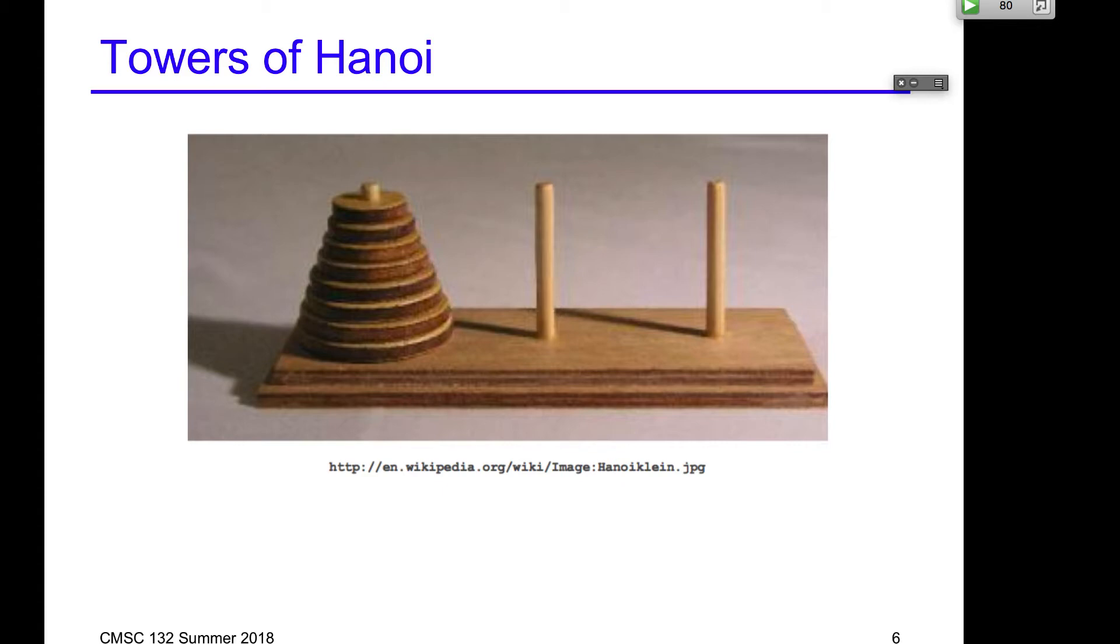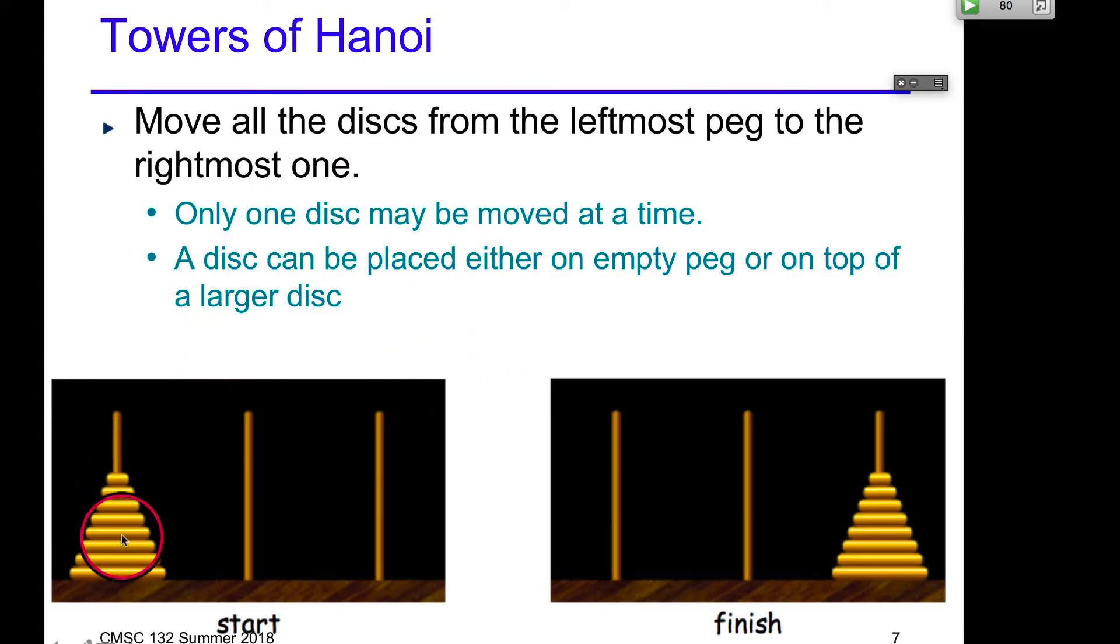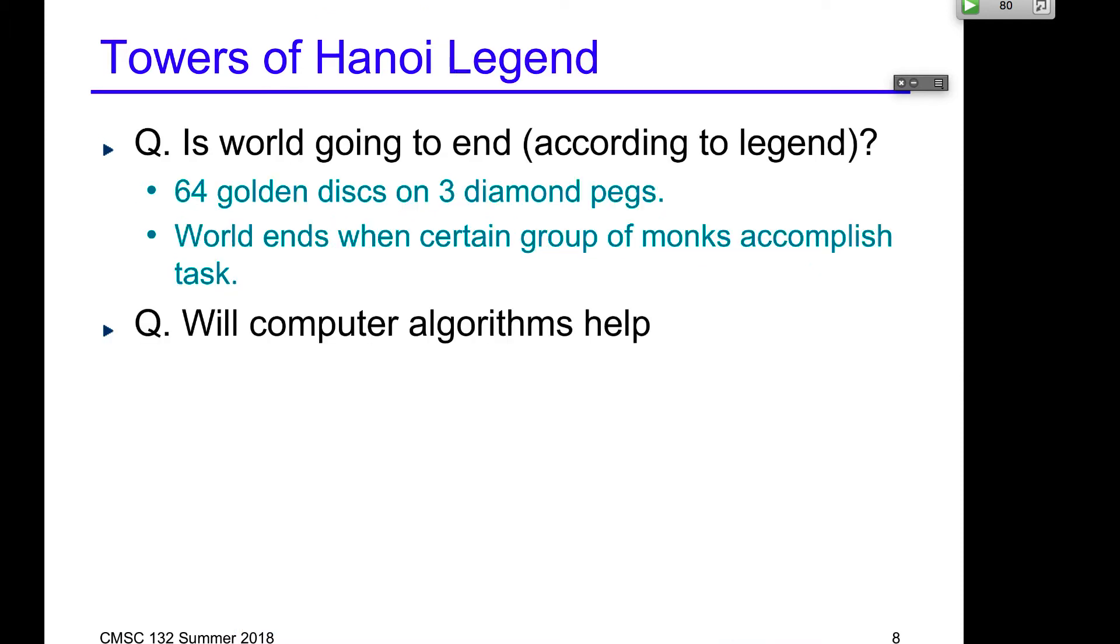So this question is, we have these golden plates and diamond needles, and we have the source, the destination, and this auxiliary middle. The problem is move everything - all those 64 plates from the source to the destination. The rule is that you can only move one plate at a time, one disc, and each has different size. You cannot put larger on top of the smaller. The legend says, in a temple in India, the monks started this mission 2,000 years ago. They're still doing it. If they finish it, world will end.